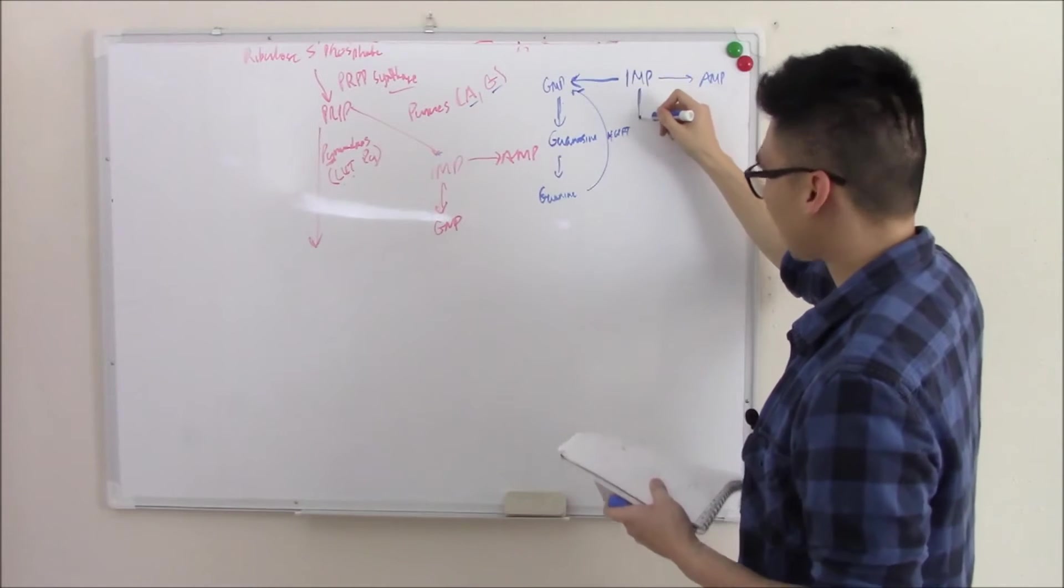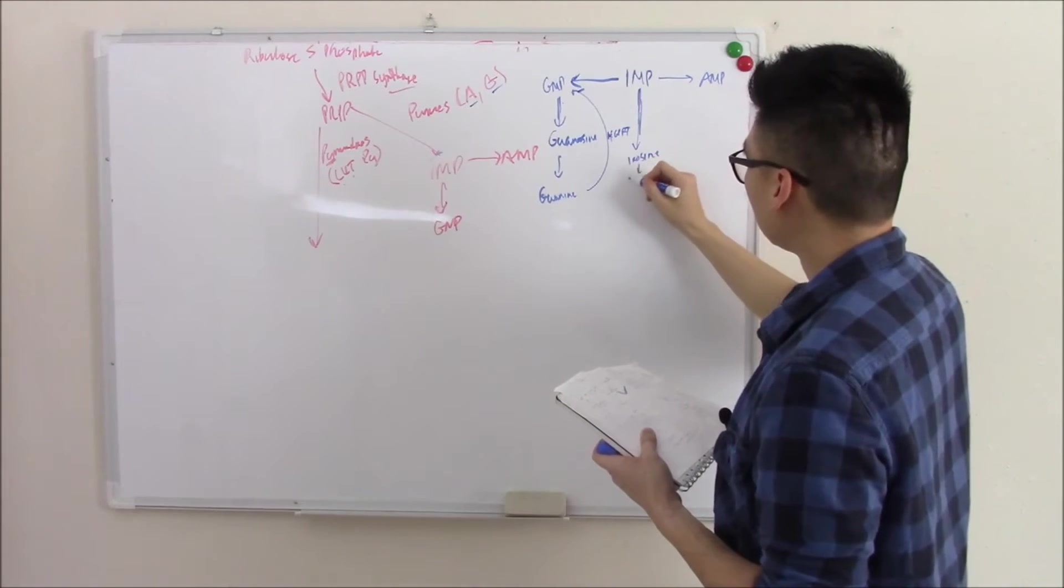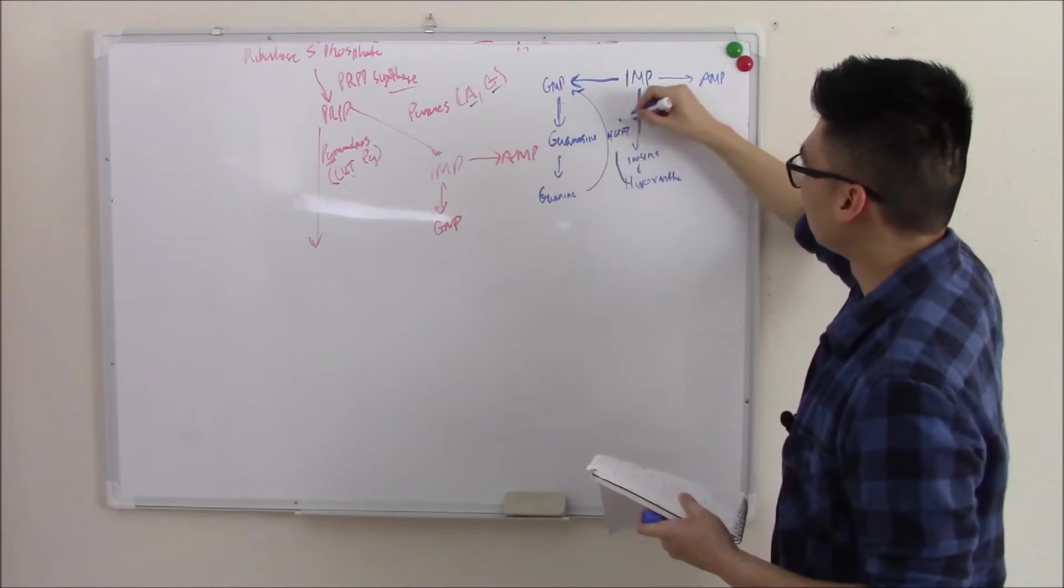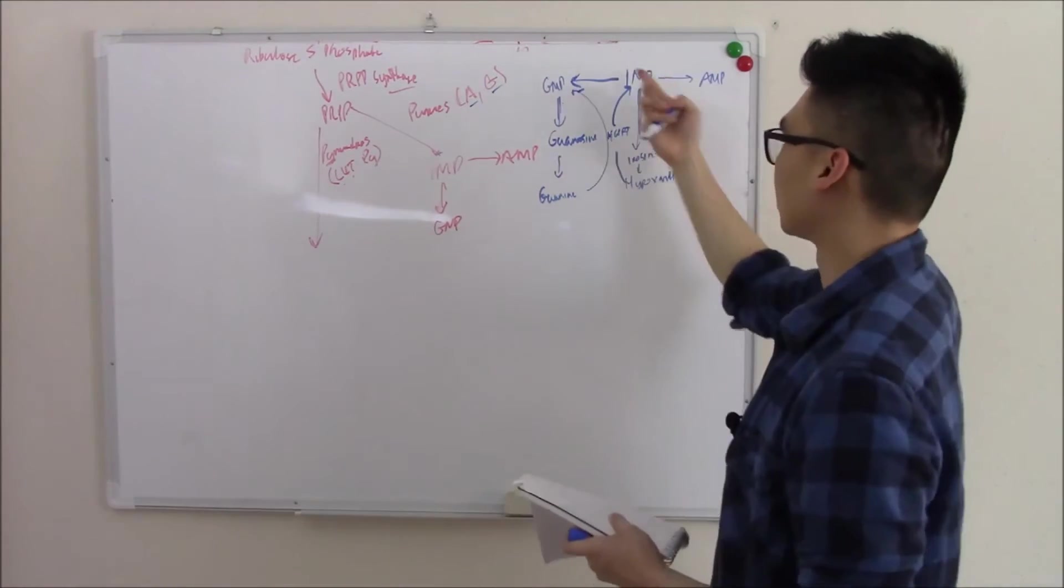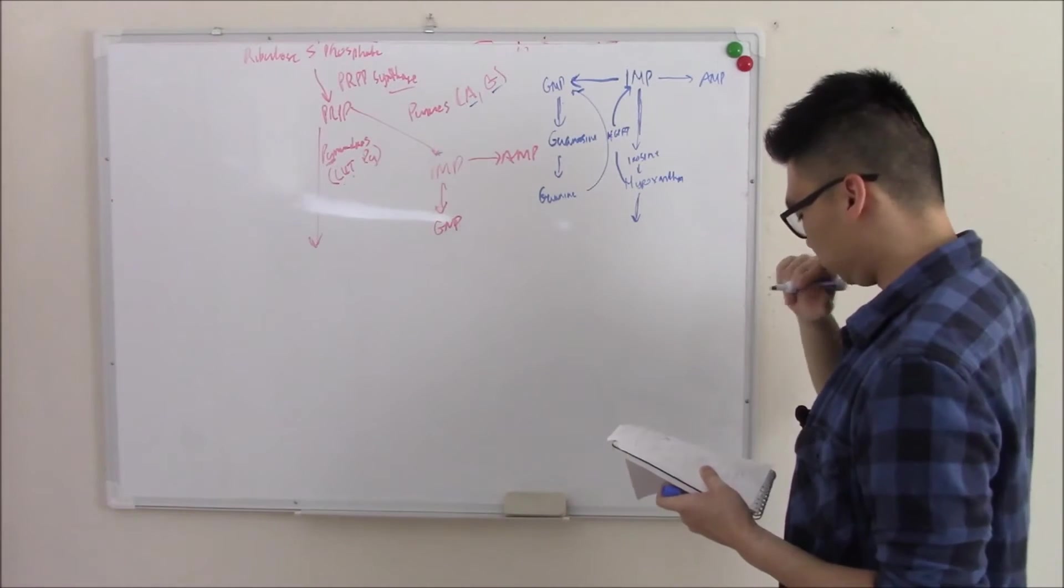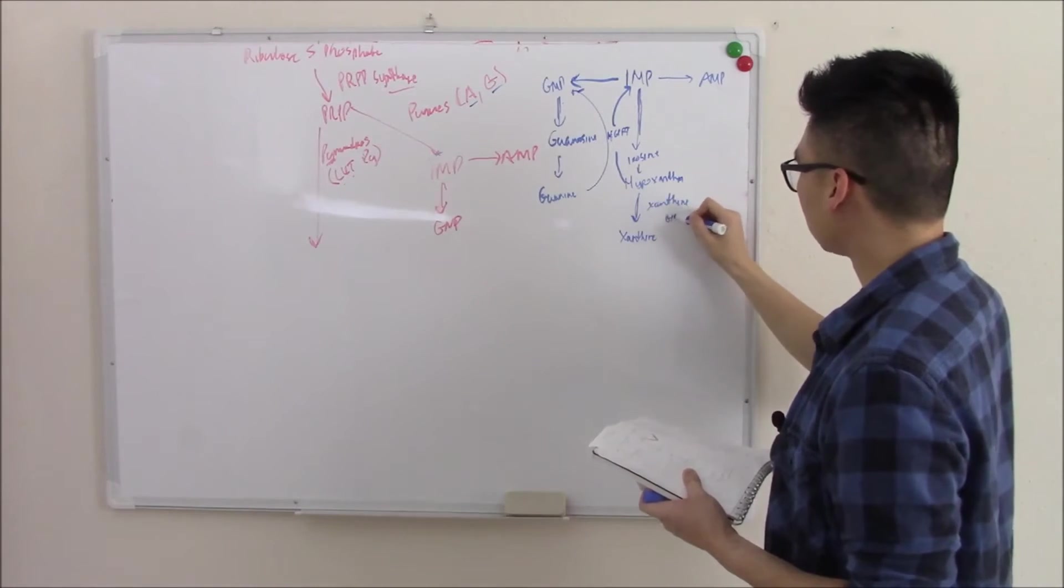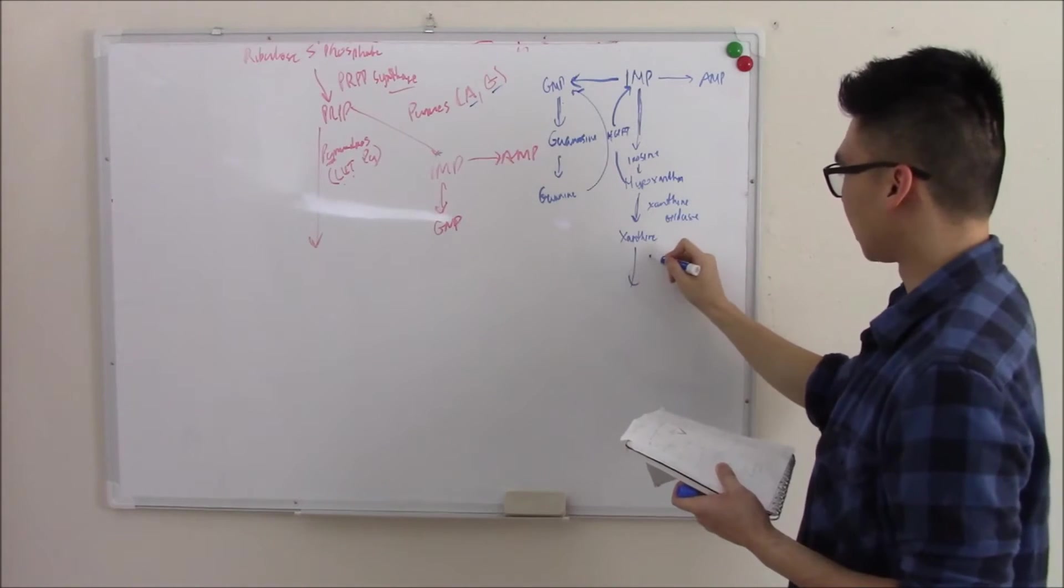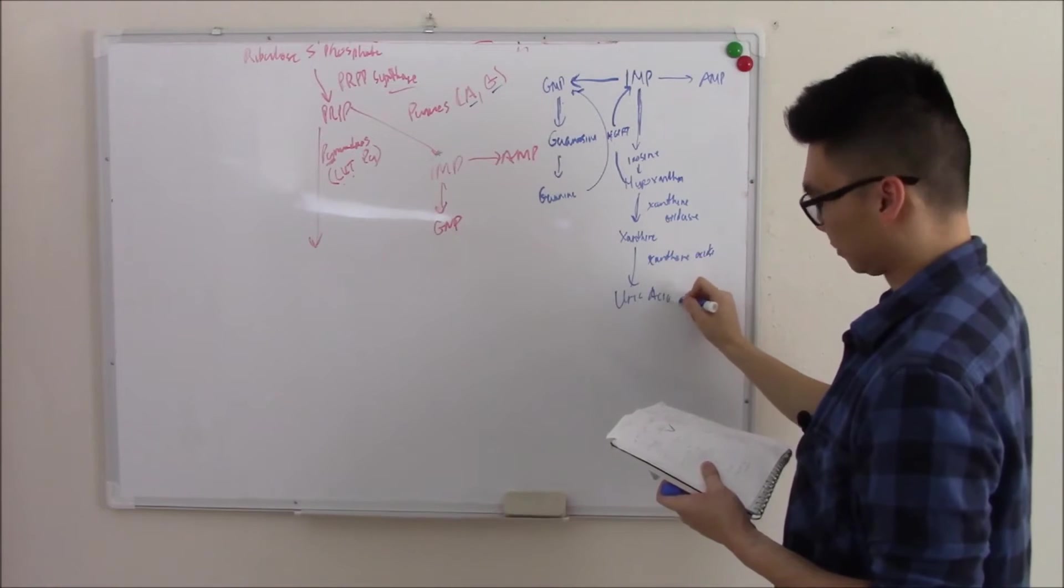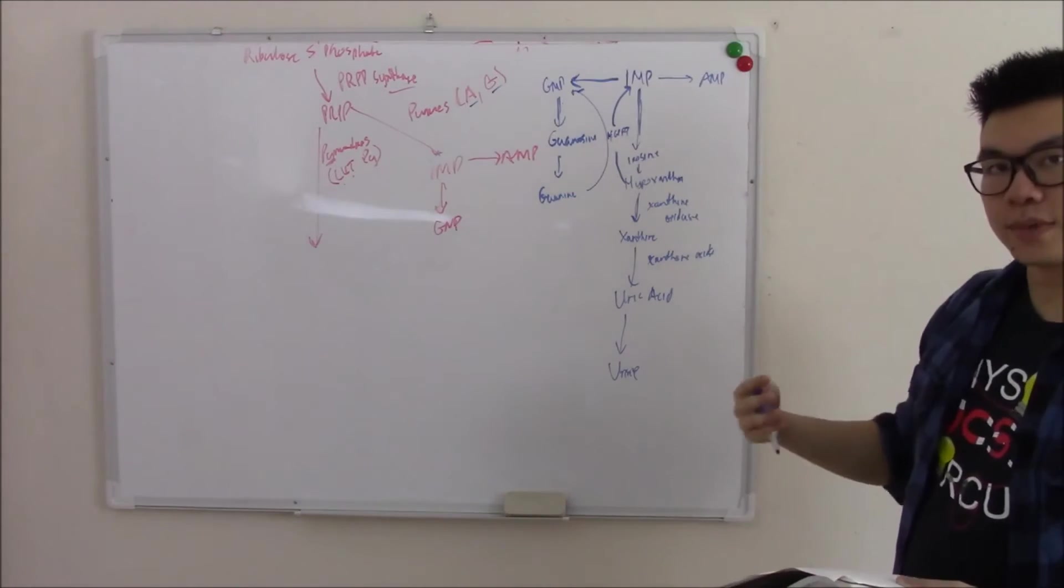HGPRT brings it back, salvages it. IMP kind of goes through the same steps. IMP eventually becomes adenine and that becomes hypoxanthine. Again, HGPRT will bring it back, salvage it, and that can create your purines again. If it doesn't need to be salvaged, then hypoxanthine will eventually become xanthine via the enzyme xanthine oxidase. Xanthine, again, via xanthine oxidase becomes uric acid. And that leaves your body in your urine.